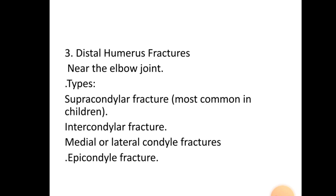Distal humerus fractures occur near the elbow joint. Types include supracondylar fracture (the most common in children), intercondylar fracture, medial or lateral condyle fractures, and epicondyle fractures — four types in total.